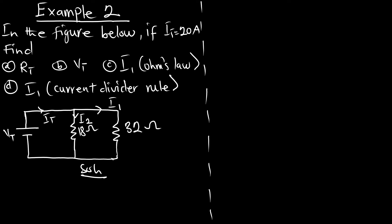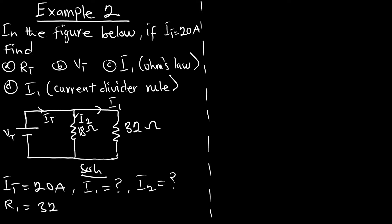Our given values: It equals 20 amperes. i1 and i2 are both unknown. Resistor one R1 is 32 ohms because i1 is passing through it. R2 takes current i2 and is 18 ohms. If you interchange these parameters it is going to affect your solution. Because i1 passes through 32 ohms I am calling it resistor one, and because i2 passes through 18 ohms I am calling it resistor two.